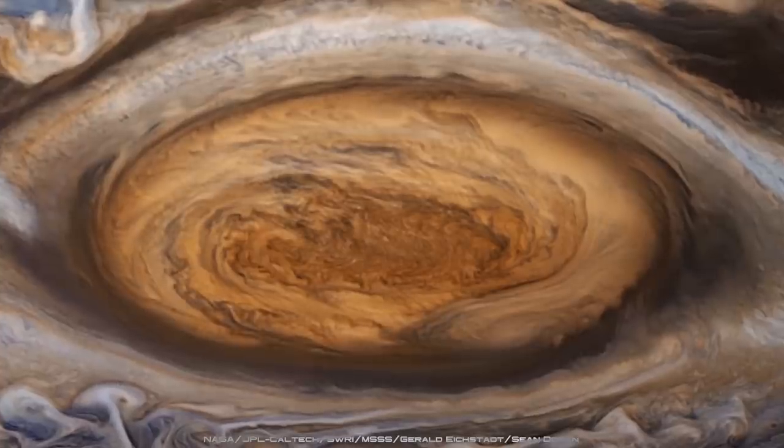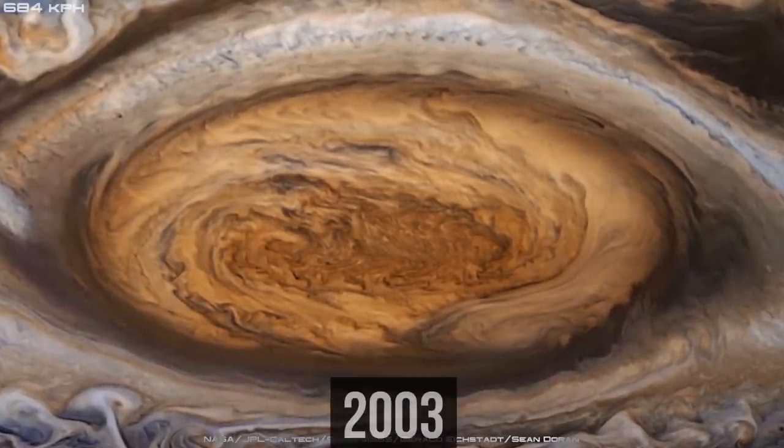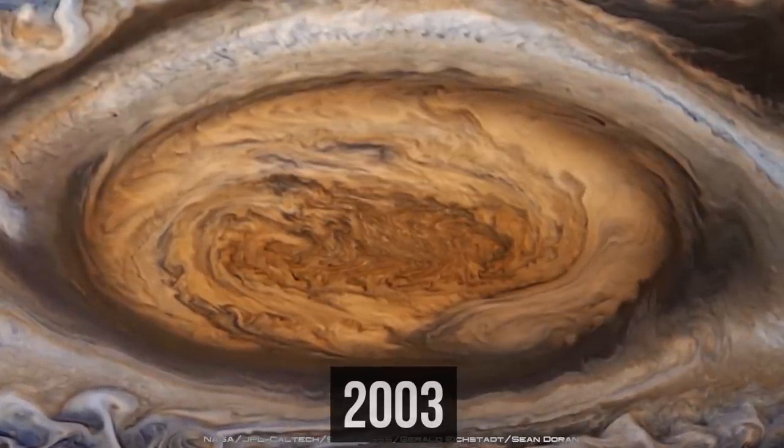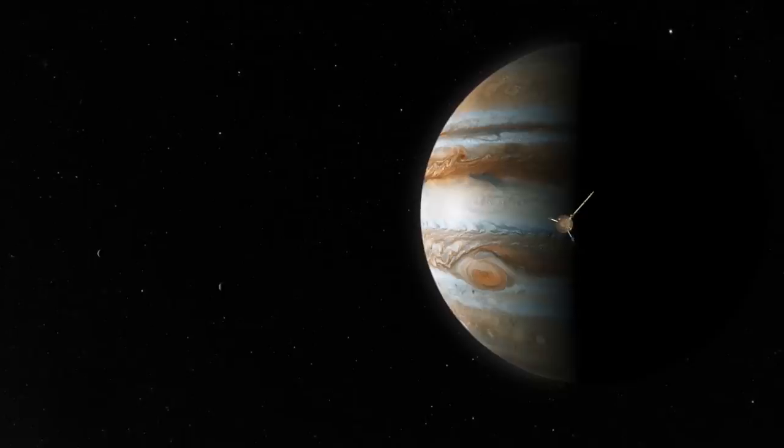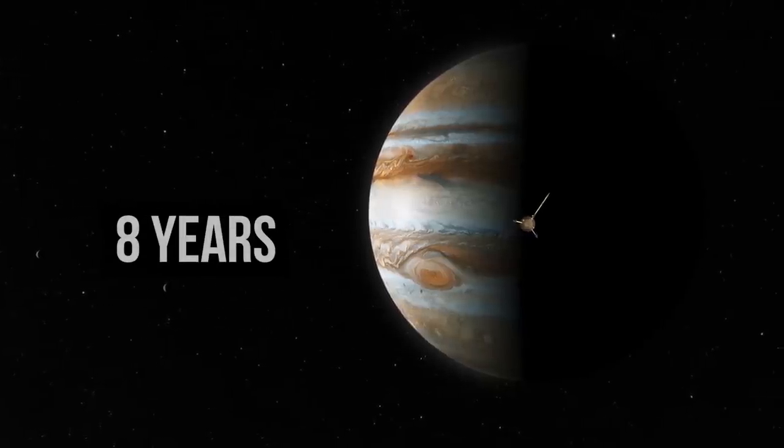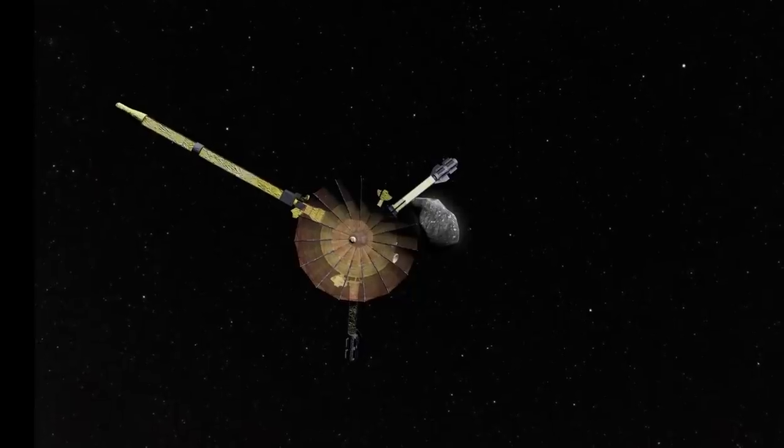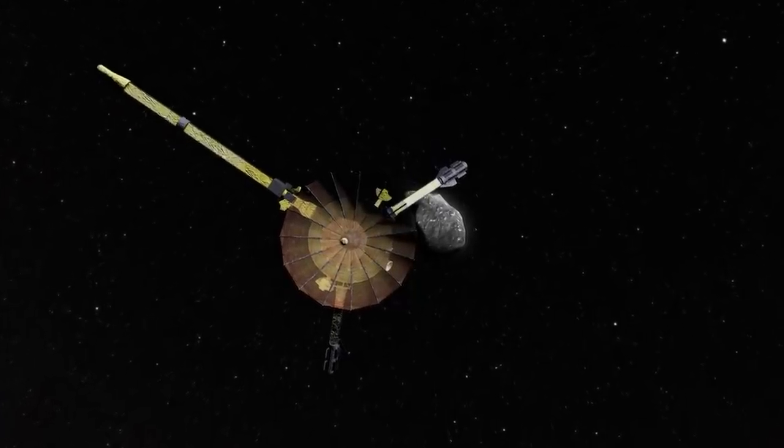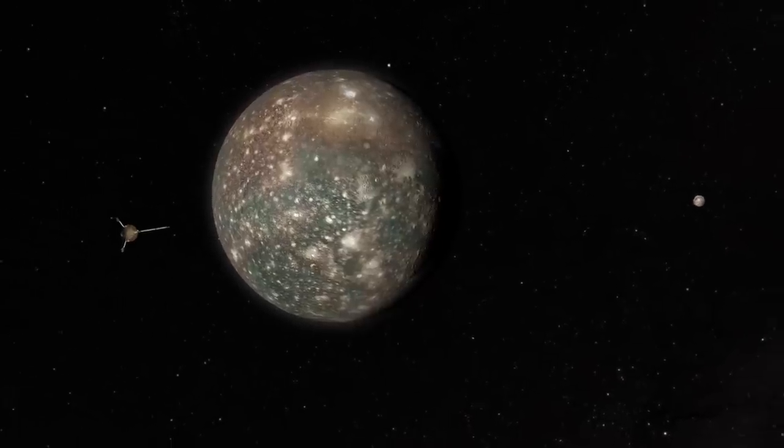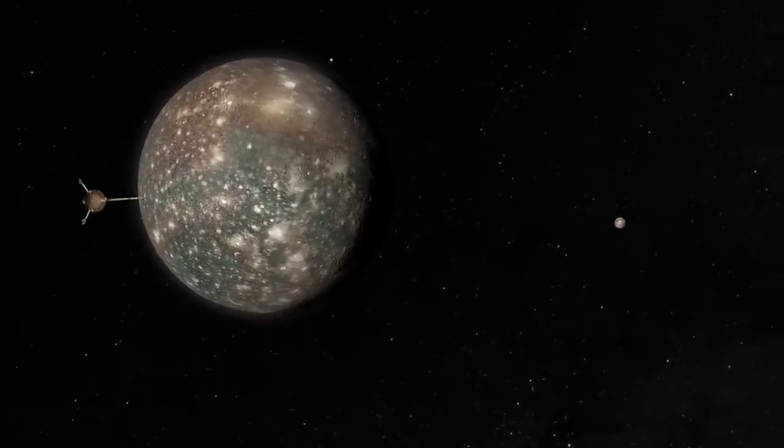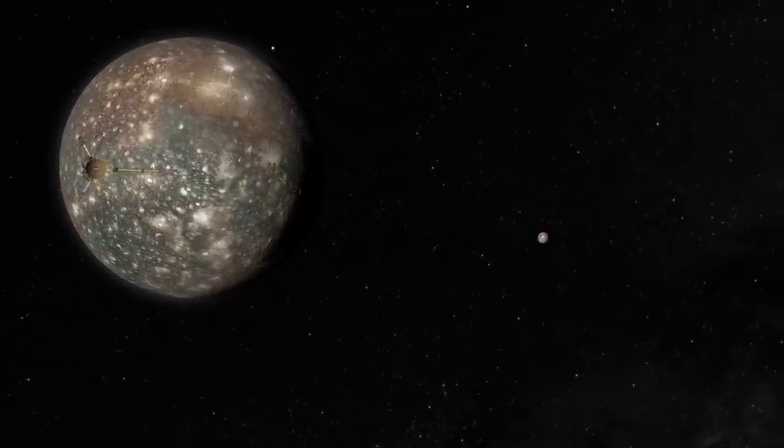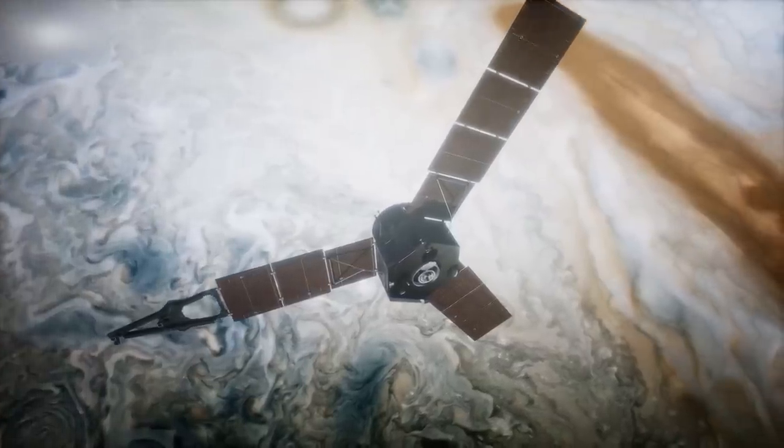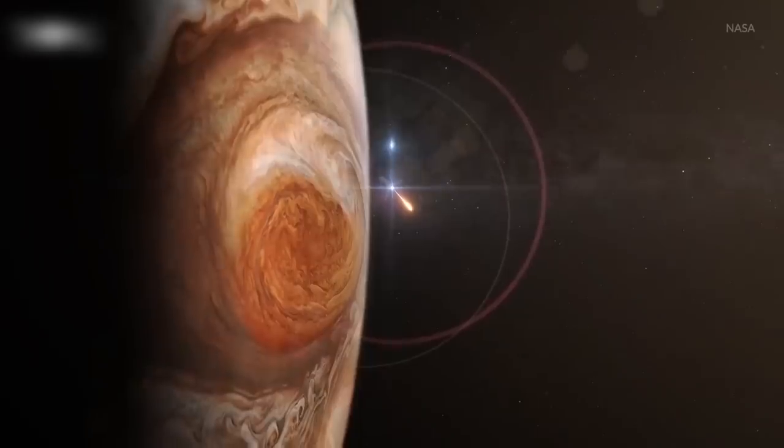Jupiter could have become infected with life back in April 2003, when the Galileo probe, after eight years in orbit, headed into the atmosphere of the gas giant. NASA decided to dispose of Galileo to prevent possible contamination of Jupiter's moons with Earth-based microbes.